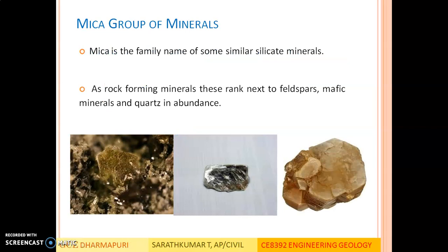Mica is the family name of similar silicate minerals, so mica also has a base material of silica. As rock-forming minerals, these rank next to feldspar, mafic minerals like pyroxenes and amphiboles, and quartz in abundance. So next to feldspar, pyroxenes, amphiboles and quartz, mica minerals are the most common rock-forming minerals. Some of the mica minerals are shown in the figures in the slide.